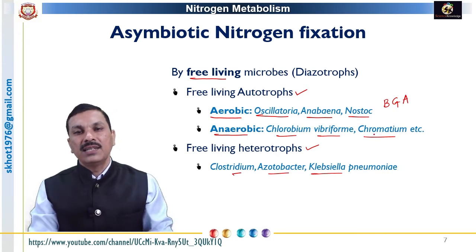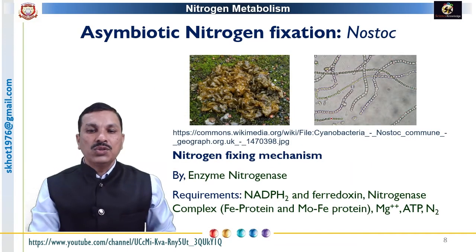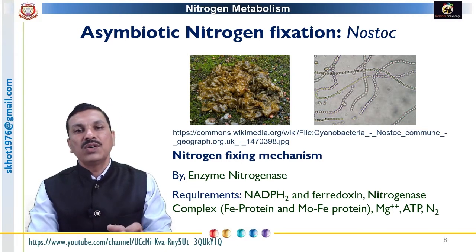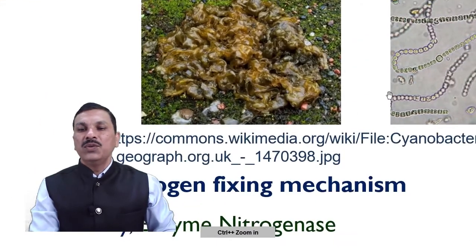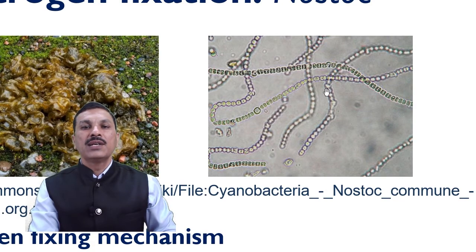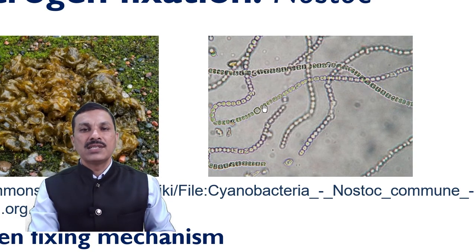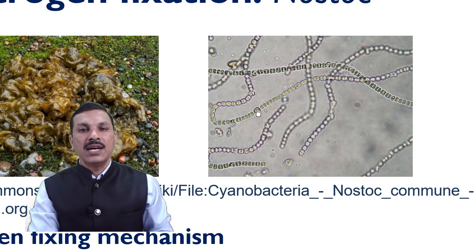We will now see in detail the process of nitrogen fixation in one aerobic autotrophic diazotroph — specifically Nostoc. Nostoc is a blue-green algae commonly present in paddy fields; in the rainy season we can see Nostoc colonies on rocky plains and grasslands. Under the microscope, the filament consists of a number of cells linked to each other. Most cells are vegetative cells, which are photosynthetic, while certain cells are different — they are thick-walled, shining, and colorless. These specialized cells are called heterocysts.